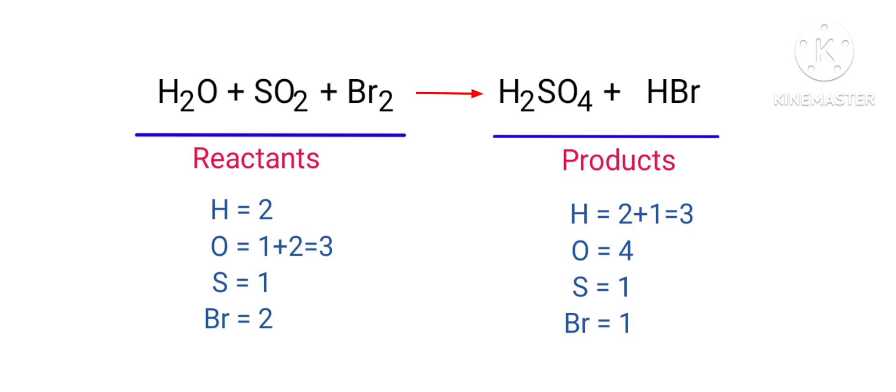In this equation we need to balance the bromine atoms first. To do this we need to put a coefficient of two in front of HBr. The bromine atoms are balanced.